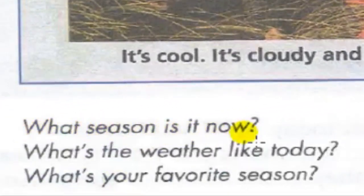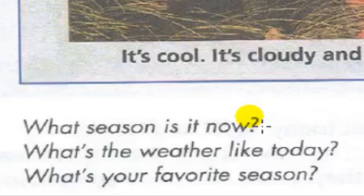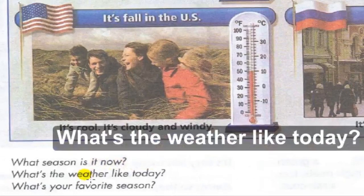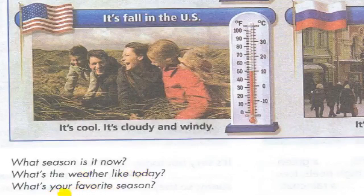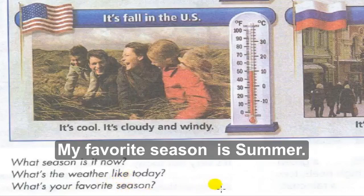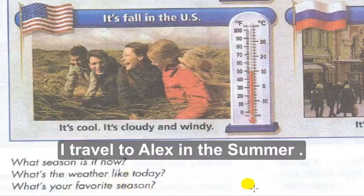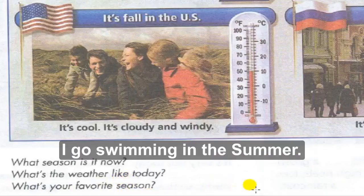What season is it now? We have four seasons: summer, winter, spring, autumn — or fall. We are in winter. It's winter. What is the weather like today? Today in Egypt it's warm, it's not hot — it's warm and sunny. What's your favorite season? My favorite season is summer — I travel to Alexandria in the summer, I go swimming in the summer.